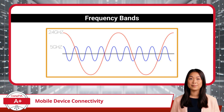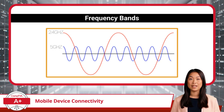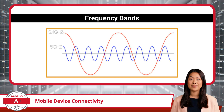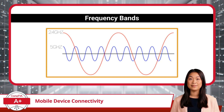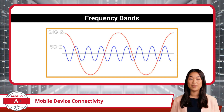Now let's meet our speedy sprinter, the 5GHz band. It may not travel as far as the 2.4GHz band, but it offers faster and more reliable connections over shorter distances. Due to its higher frequency, the 5GHz band can handle more data, making it ideal for higher bandwidth tasks like HD video streaming, online gaming, and file transfers. Additionally, since the 5GHz band is less crowded, it experiences less interference, providing a smoother and more consistent Wi-Fi experience.